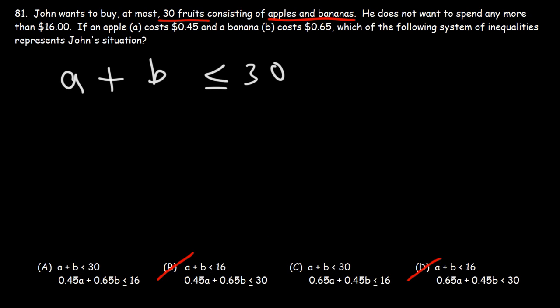Now what is the second inequality that we can write? The second inequality has to do with the costs. He does not want to spend any more than $16. So the cost of all the apples he's going to buy is 0.45 times A, plus the cost for each banana, which is 0.65 times B. That should not exceed $16, so it has to be less than or equal to 16.